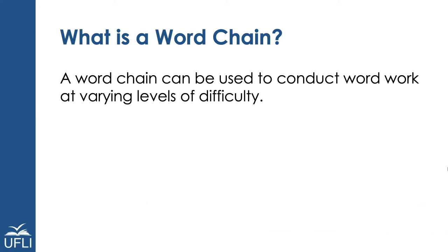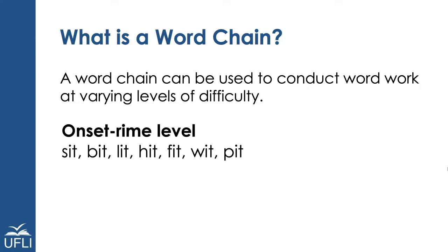When you're making a word chain, you want to think about how challenging the word work that you're going to be doing needs to be. Word work at the onset-rhyme level keeps the rhyme of the word intact — that's the vowel and anything after it — and changes anything that comes before the vowel. So it can be simply changing the initial consonant, or it can be a little bit more complex by using consonant clusters as part of the onset.